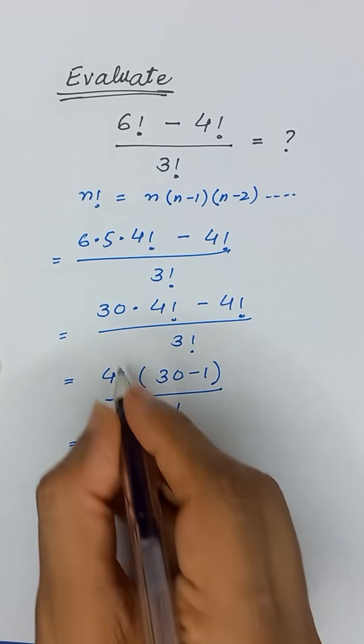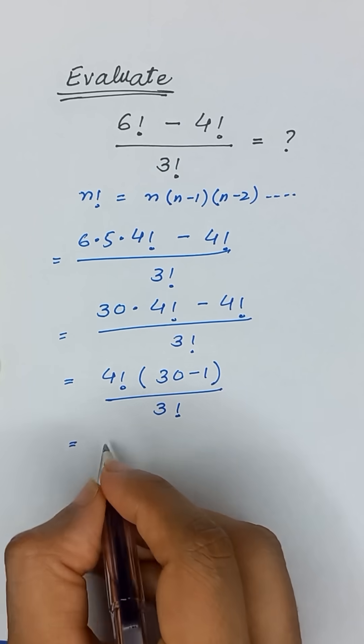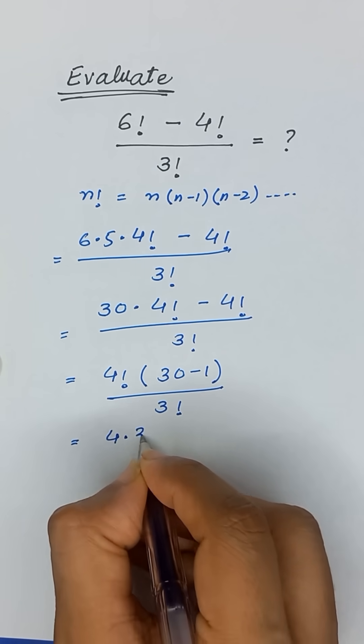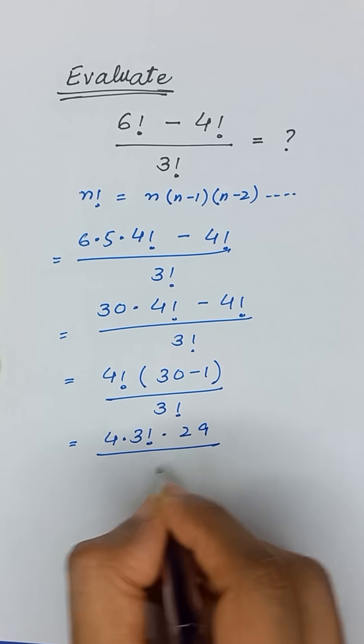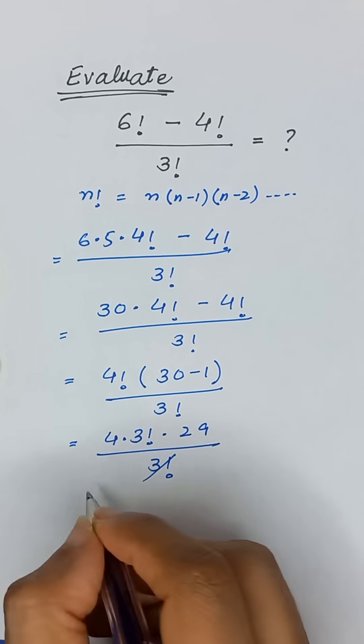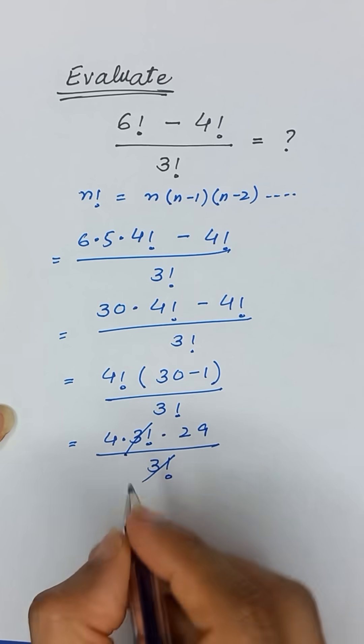Now we will open 4 factorial as 4 times 3 factorial times 29 divided by 3 factorial. So this 3 factorial and 3 factorial will be cancelled out.